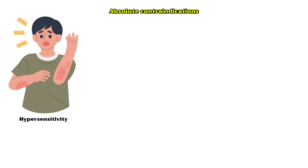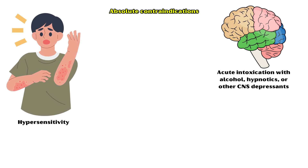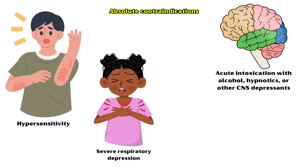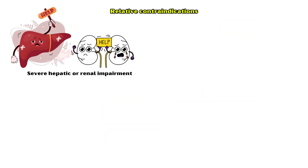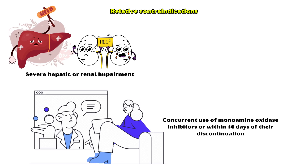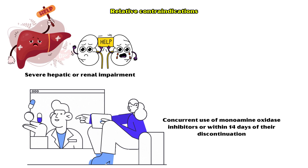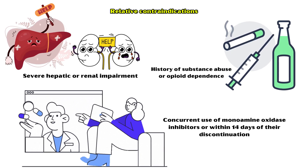Absolute contraindications for tramadol include hypersensitivity to tramadol or its components, acute intoxication with alcohol, hypnotics, or other central nervous system depressants, severe respiratory depression, and uncontrolled epilepsy. Relative contraindications include severe hepatic or renal impairment, concurrent use of monoamine oxidase inhibitors or within 14 days of their discontinuation, and history of substance abuse or opioid dependence.